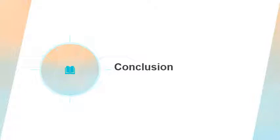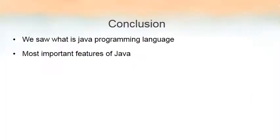So we shall conclude now. We covered what a programming language is and why we need it, about Java and who invented it, then bytecode, and some features of Java — why Java is said to be platform independent, why Java is said to be robust. We discussed only the top five features of Java.